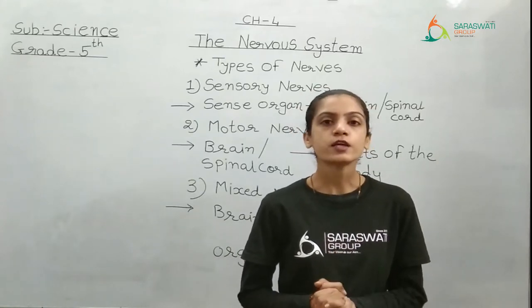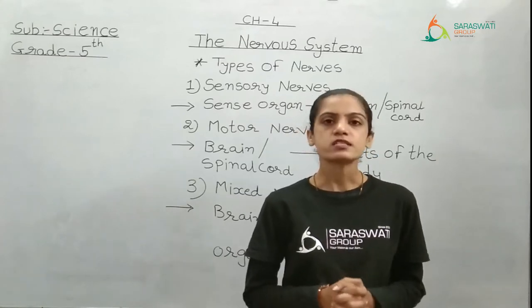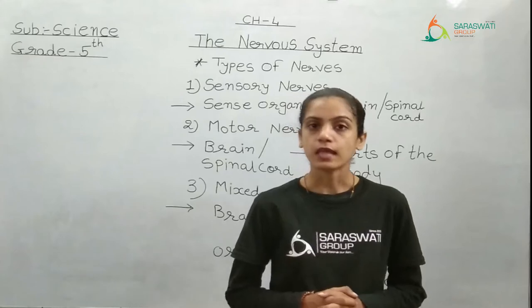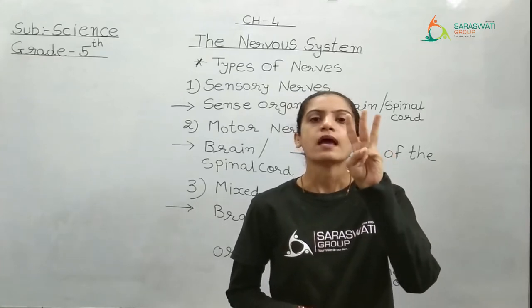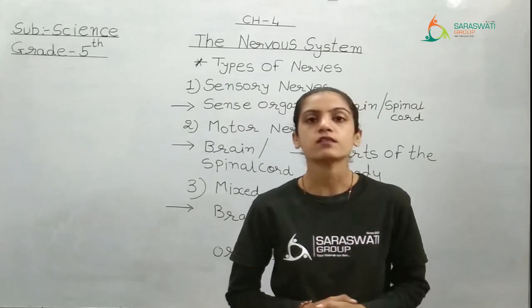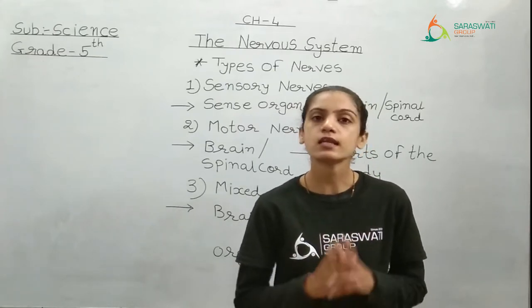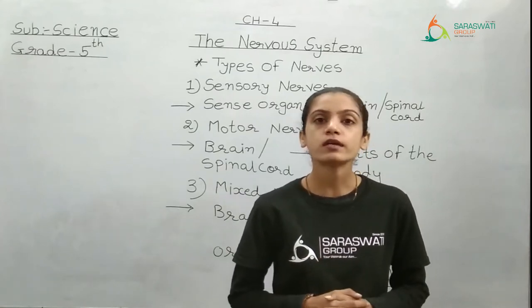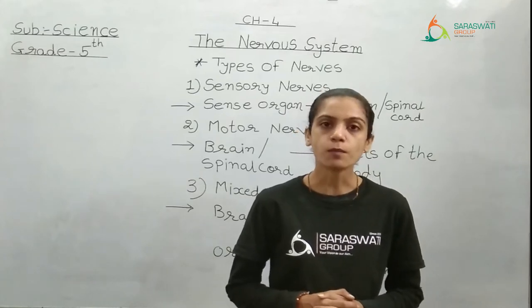Before I start the new topic, we just have to recall one thing. The nervous system consists of three things: brain, spinal cord, and nerves. About the brain we have studied in the video lecture, about the spinal cord in the live lecture, and with the spinal cord we have also studied about nerves. So today we are moving further after that topic.